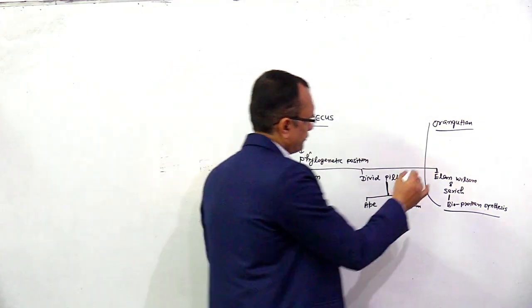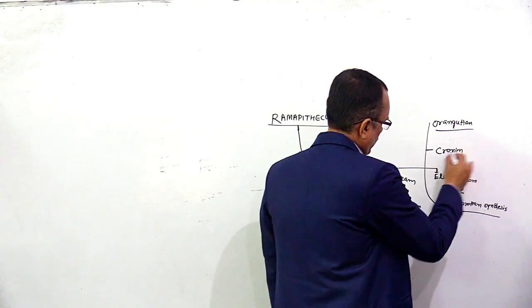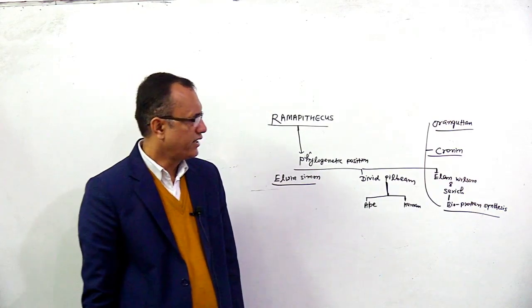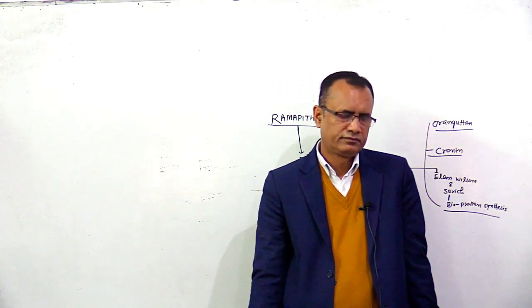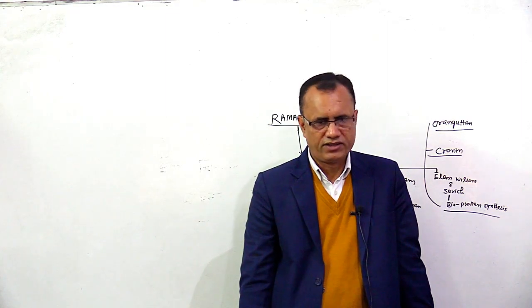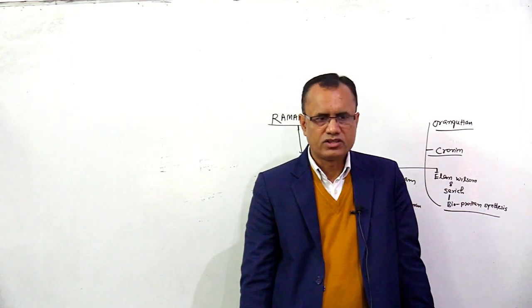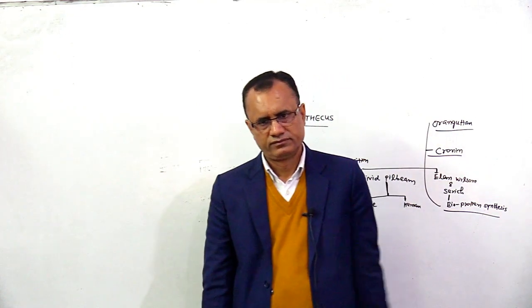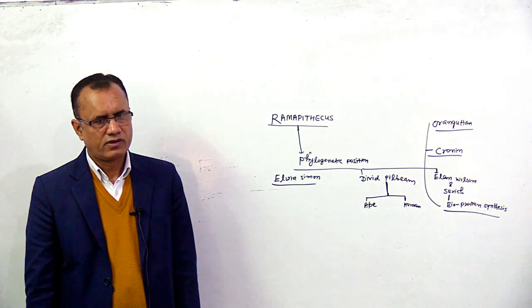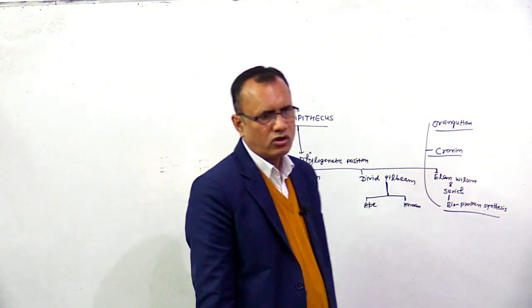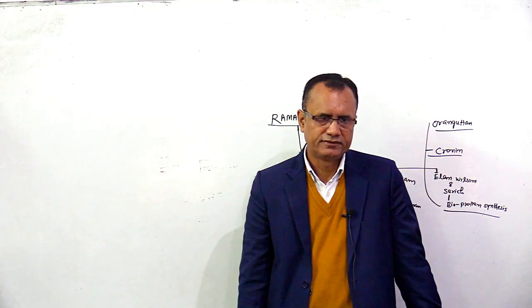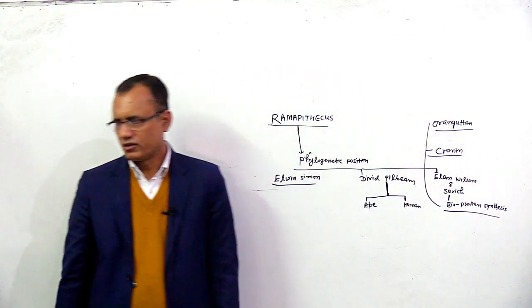Cronin has also said that Ramapithecus was not an ancestor of man, because he was the ancestor of Orang Utan, not an ancestor of man.